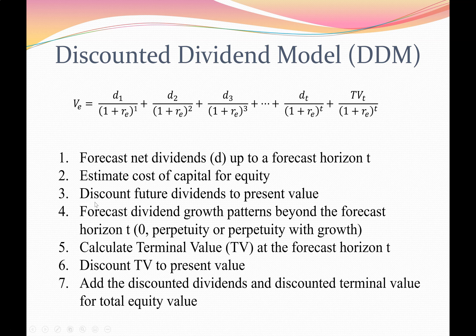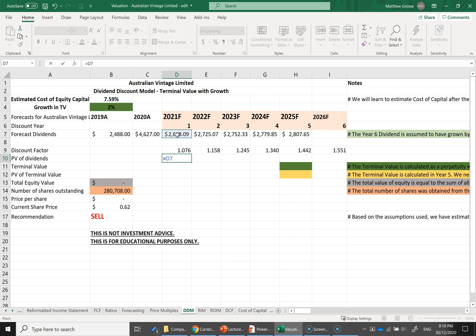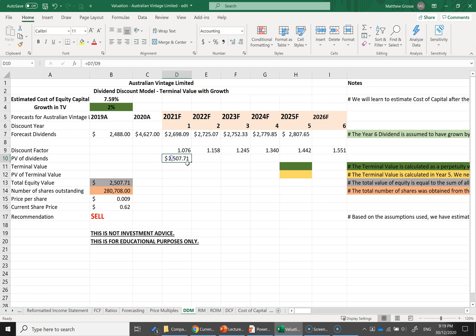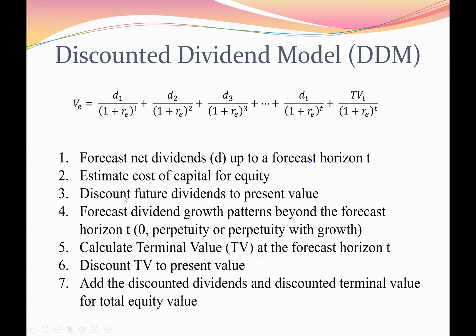Step three is to discount future dividends to the present value. I now have the dividend and the discount factor, so I simply divide the dividend by the discount factor to get the present value of dividends. I drag that formula along across all years as well.